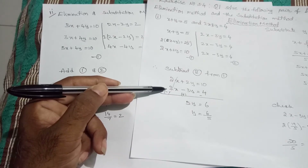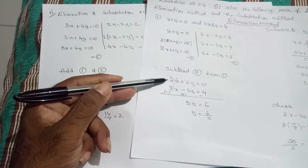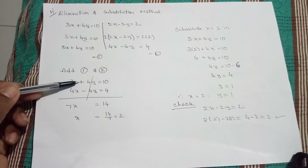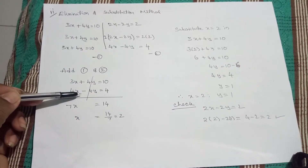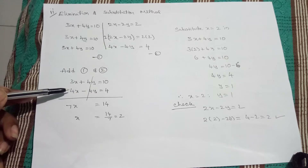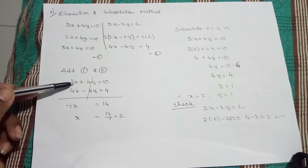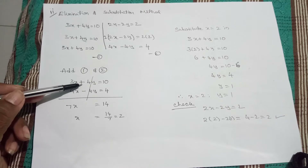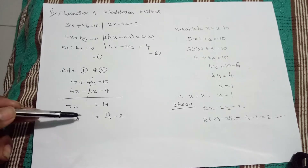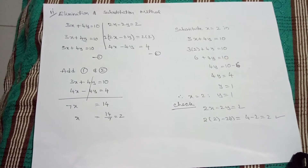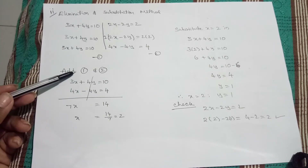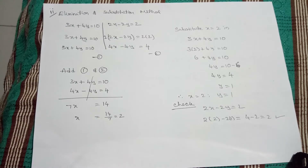Therefore here the sign will be plus and here it will be minus, so opposite sides automatically cancel. But here the signs are already opposite — one is plus, another is minus. So you need not multiply by minus. What will happen if you multiply by minus? You get 3x minus 4x and 4y plus 4y, and another equation in x and y will come — it just prolongs the solution. So whenever the signs are opposite, go directly for addition.